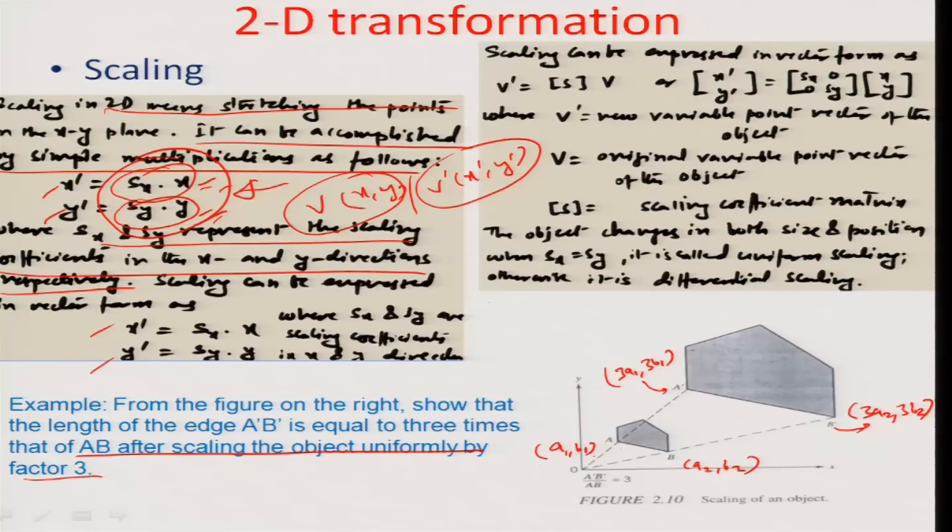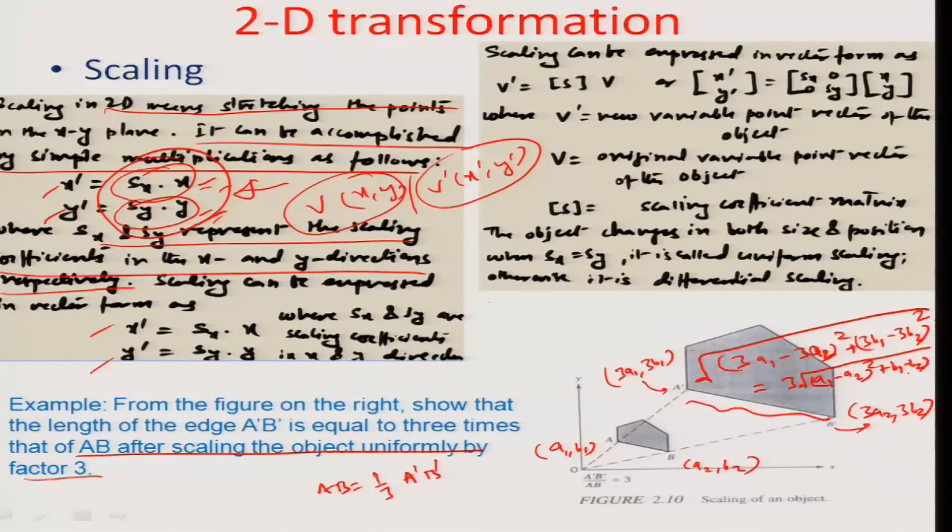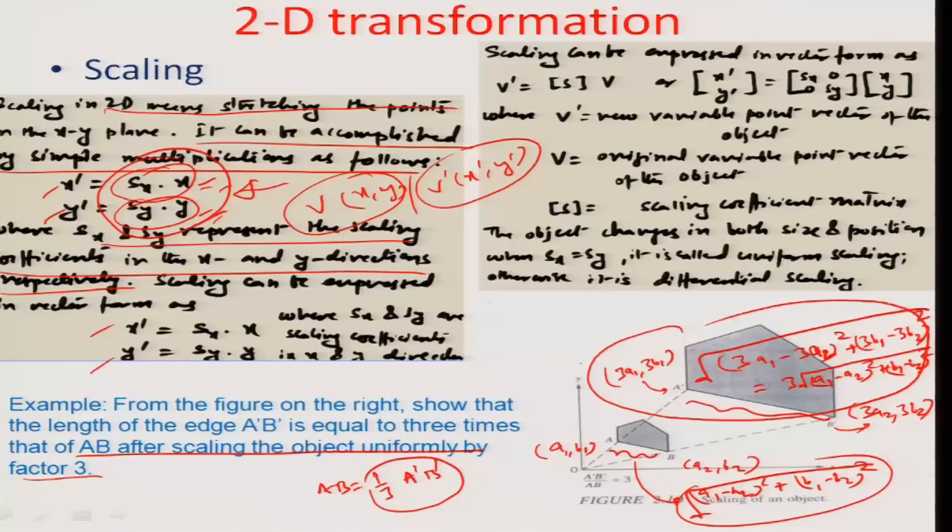You can see here that the length ab is exactly equal to one third of the length a'b'. If I just calculate the length a'b' here which is √[(3a1-3a2)² + (3b1-3b2)²], this becomes exactly 3√[(a1-a2)² + (b1-b2)²] and the length ab was earlier represented as √[(a1-a2)² + (b1-b2)²]. Therefore, this exactly ab length is a third of the a'b' length which is given in this calculation here.